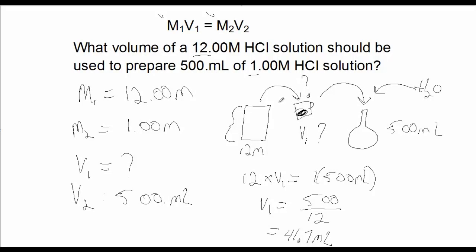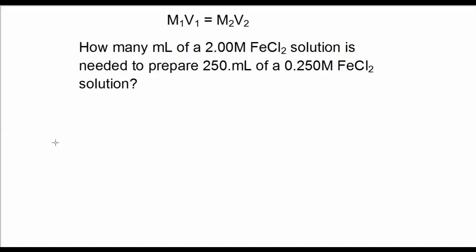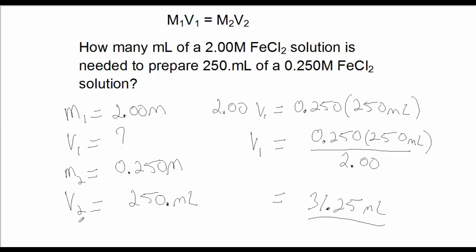I'll make up a couple of problems and let you try them. How many mL of a 2 molar iron(II) chloride solution is needed to prepare 250 mL of a 0.25 molar iron(II) chloride solution? Pause the video and give it a shot. M1 is 2 molar, V1 is the unknown, M2 is 0.25 molar, and V2 is 250 mL. Solving for V1, I get V1 = 31.25 mL.